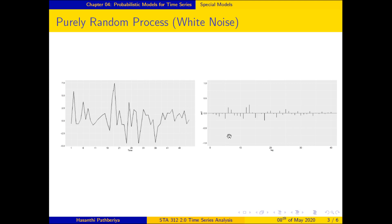In the ACF plot for a white noise process, all the autocorrelation coefficients at all lags lie between the two confidence limits. We cannot find any significant autocorrelation at any of the lags. This means the process is a white noise process, containing only random fluctuations and irregular variations.